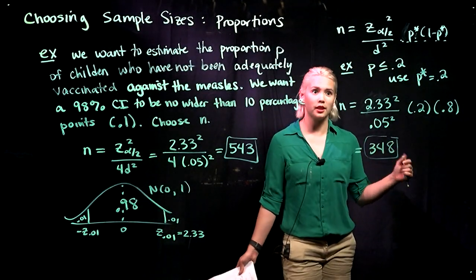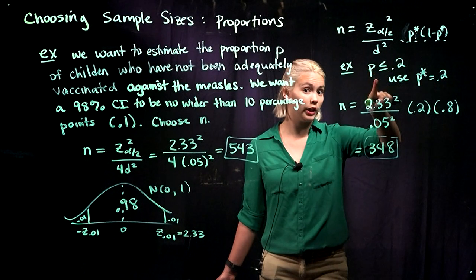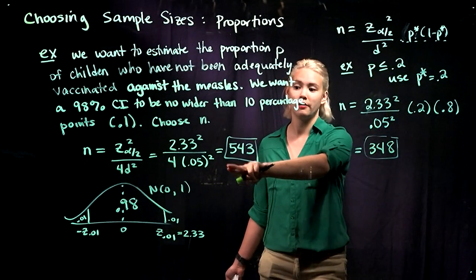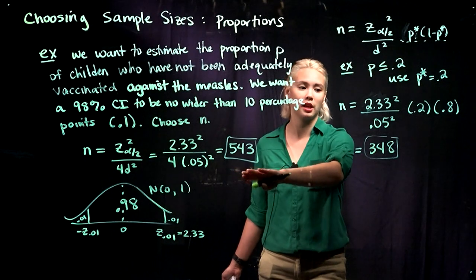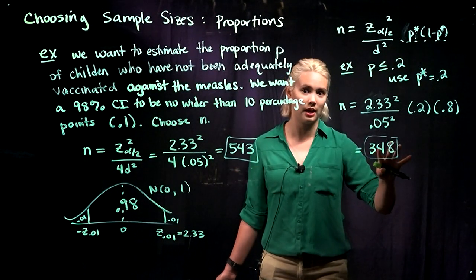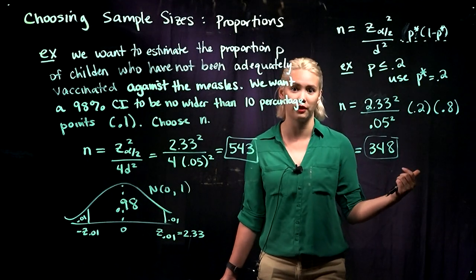We can see that when we had this little bit of information, it was very useful for reducing our sample size. So instead of having to sample 543 people, we can sample almost 200 children less. So that's going to make our study a lot cheaper and a little bit faster, too.